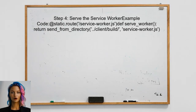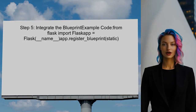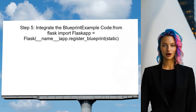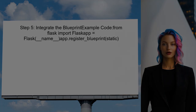Additionally, set up a route for the service worker file. This is important for enabling features like offline support in the React application. Finally, integrate this blueprint into the main Flask application. This will ensure that all routes are properly registered and the React app can be served seamlessly.